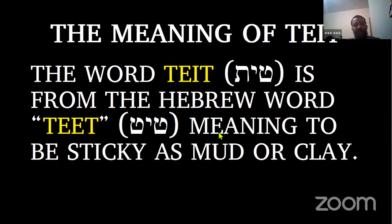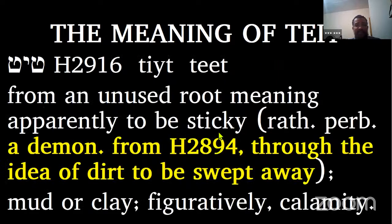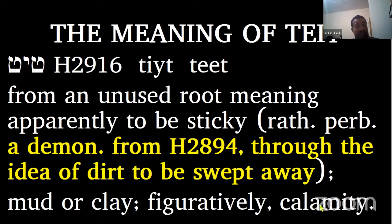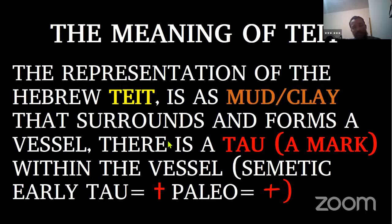Teit in Hebrew means to be sticky, like mud or clay. This is the actual word for Teit in Hebrew — apparently meaning to be sticky, and it may figuratively mean calamity. The representation of the Hebrew Teit is mud or clay as it surrounds a vessel. So the idea of the Teit is that it is a vessel made of mud or clay, and therefore has this idea of surrounding and containing something.